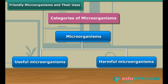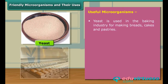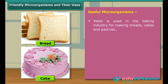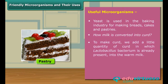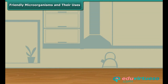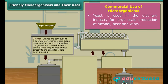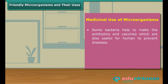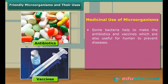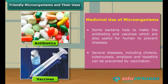Now we discuss the friendly activity of microorganisms in detail. One such friendly microorganism is yeast. Yeast is used in the baking industry and our homes for making breads, cakes and pastries. The bacterium Lactobacillus is useful to make curd from milk. Microorganisms are also useful in commercial and medicinal fields — for instance, yeast is used in the distillery industry for large-scale production of alcohol, beer and wine. Some other bacteria are helpful in production of antibiotics and vaccines. Vaccination is helpful in several diseases including cholera, tuberculosis, smallpox and hepatitis.